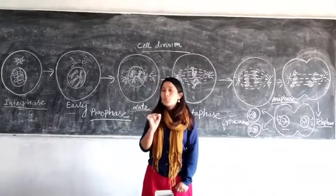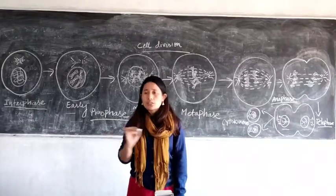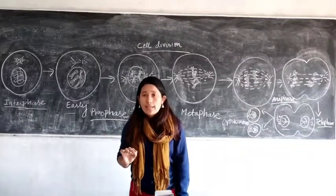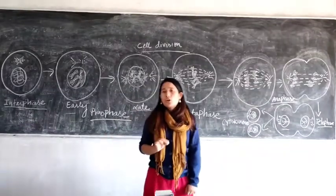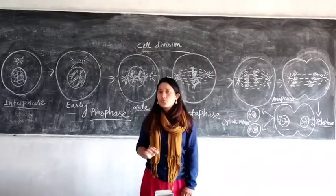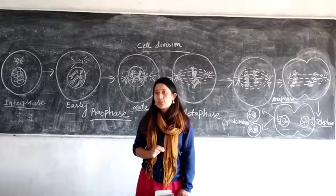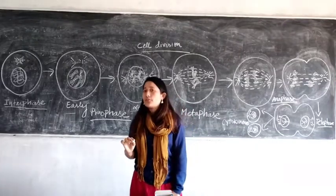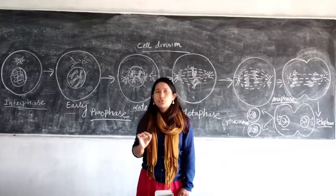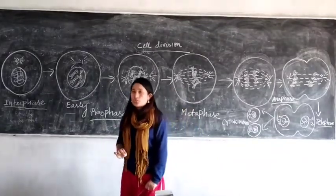We are done with mitosis. For meiosis, you just need to know what meiosis is and where it takes place. Also know why it is called reduction division — because the chromosome number is reduced to half. That is why it is called reduction division. You do not have to go through the different stages of meiosis.